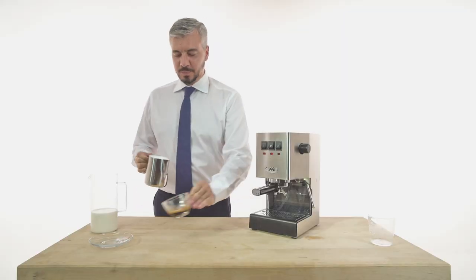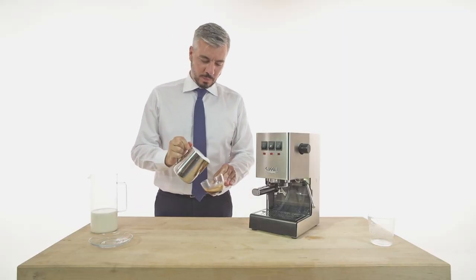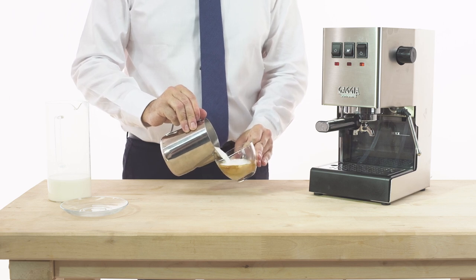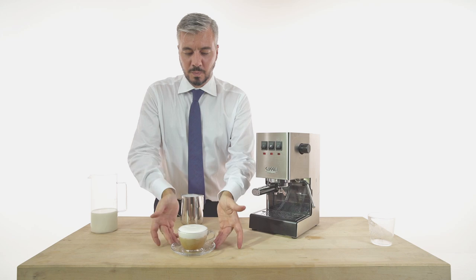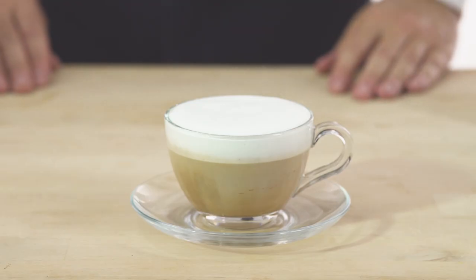Now slightly tilt the espresso cup and pour the milk froth and the underlying hot milk in it, starting from the center. Now your Italian cappuccino is ready to taste.